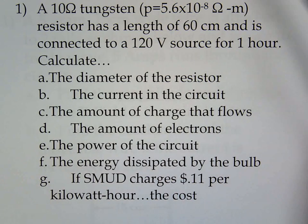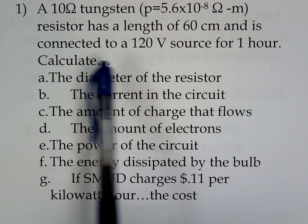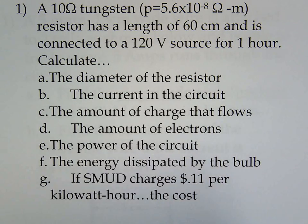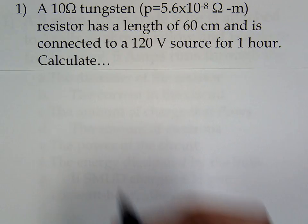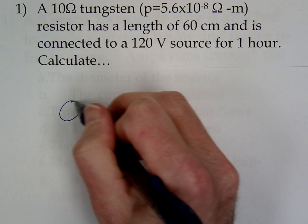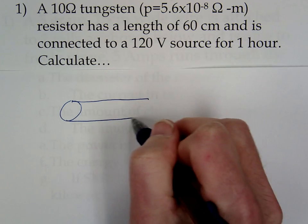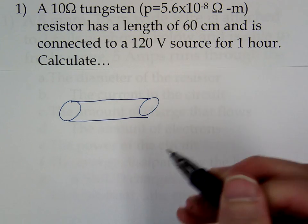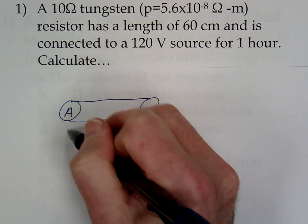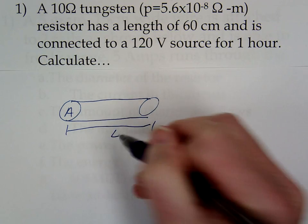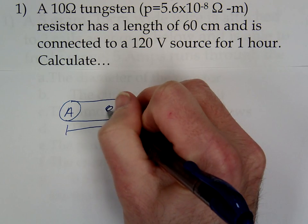So here's our situation. We have our tungsten wire resistor, and it has a certain length. So if we draw this out, typically unless they tell you otherwise, you're just going to assume it's kind of like a wire, like this, with a certain area, certain length, certain resistivity.